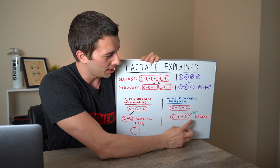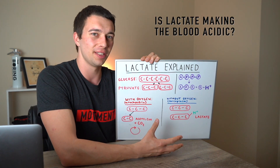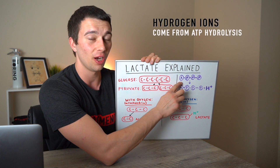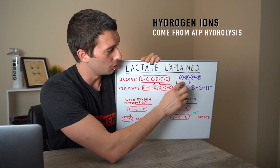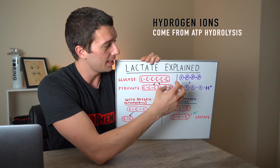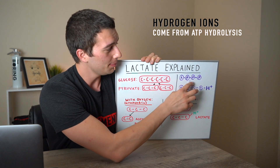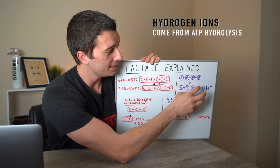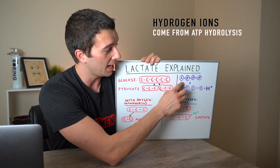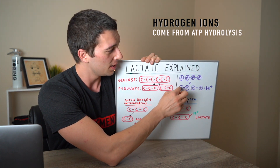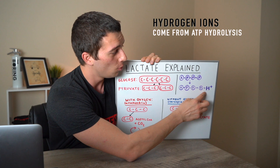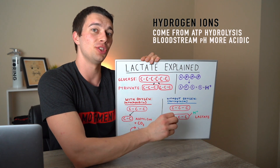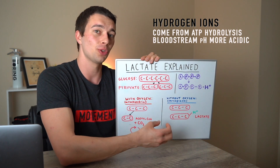Why are hydrogen ions present? Is lactate actually putting hydrogen ions in the bloodstream and making the blood acidic? The answer is no. Those hydrogen ions actually come from ATP hydrolysis. ATP — adenosine with three phosphates — is the energy currency in the body. ATP can break down to ADP by removing one of those phosphates, using an H₂O molecule in the process. That breakdown of ATP to ADP plus a phosphate actually releases a hydrogen ion into the bloodstream.